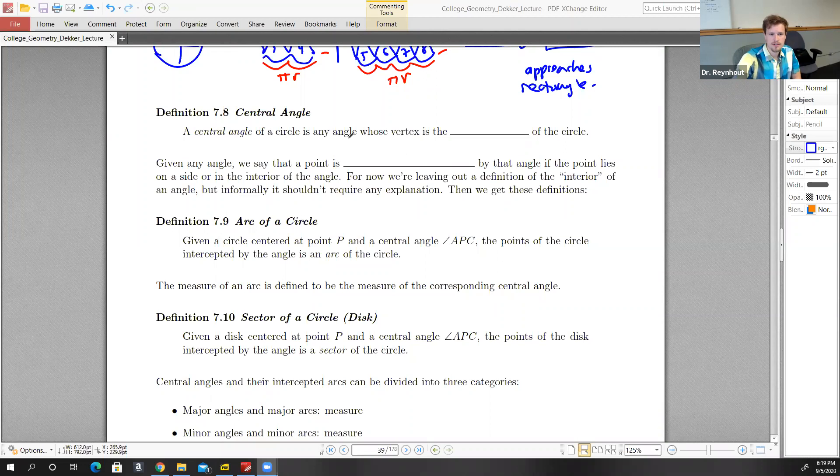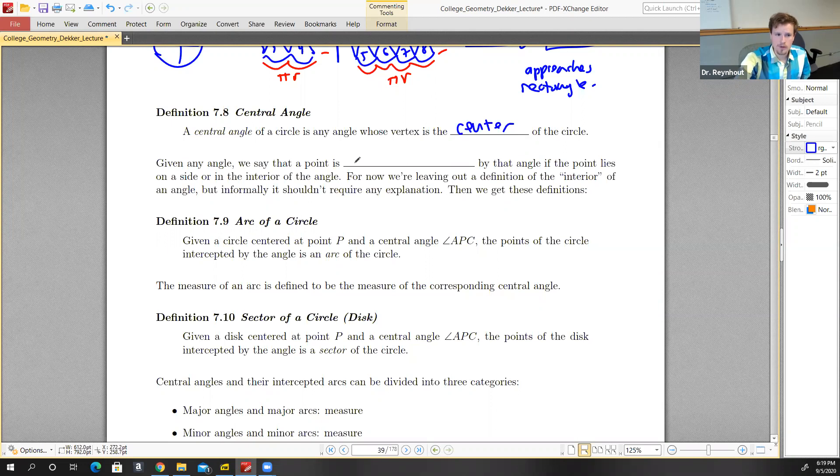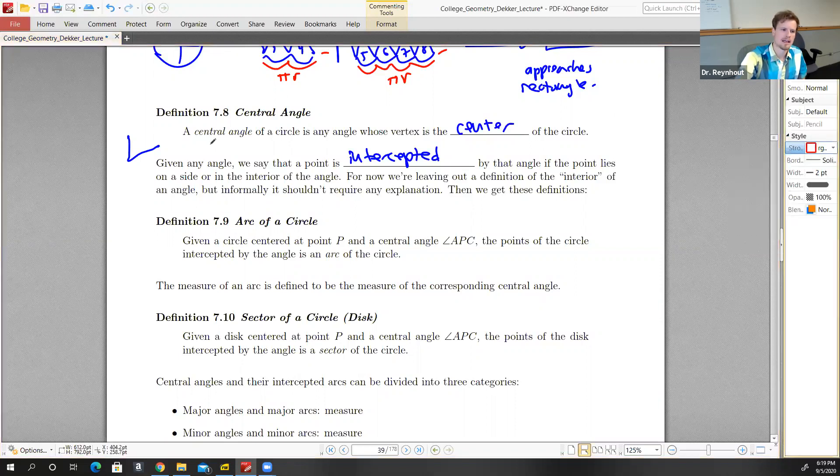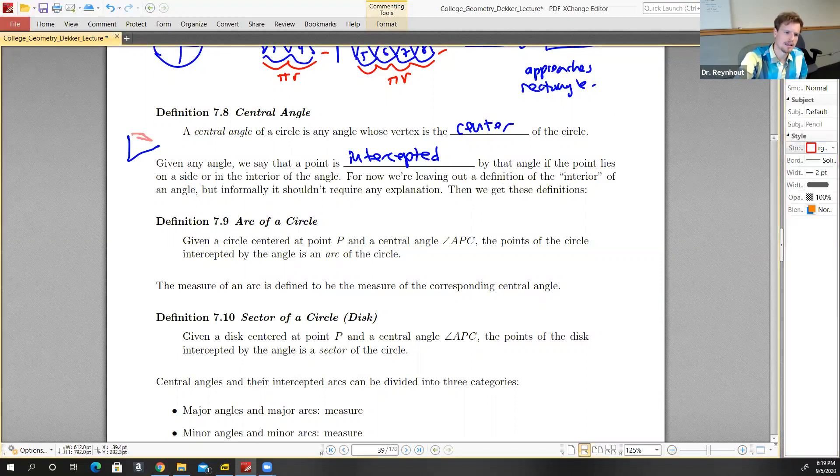A central angle of a circle is any angle whose vertex is the center of the circle. Given any angle, we say that a point is intercepted by that angle if the point lies on a side or in the interior of that angle. When we talk about the interior of an angle, we're referring to anything between those two sides.